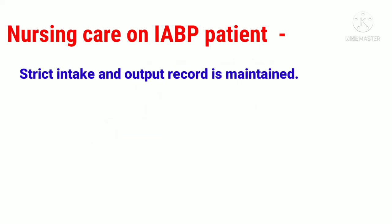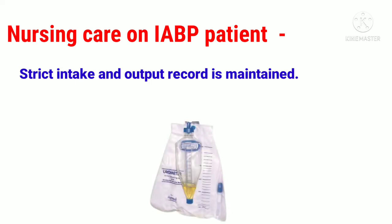Strict intake and output records must be maintained. Inform the doctor of any sudden decrease in urinary output, as this is a sign of decreased renal perfusion due to low cardiac output.